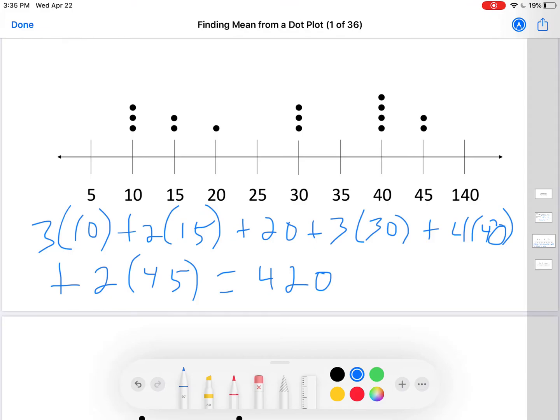I need to divide by how many there are. So 1, 2, 3, 4, 5, 6, 7, 8, 9, 10, 11, 12, 13, 14, 15. 420 divided by 15 is 28. The mean of this set is 28. That's how you find the mean.